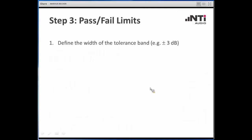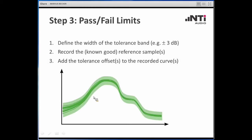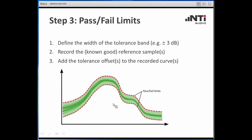How do we get to the pass/fail limits? The first step is to define the width of the tolerance band — this may be given by specifications, or as a rule of thumb you could start with ±3 dB. Then you record reference samples — loudspeakers you know are working fine. It can be just one loudspeaker as a golden sample, or several, as shown in the schematic view. We then apply this offset to the recorded curves, and that gives us the pass/fail limits — shown here as red curves.